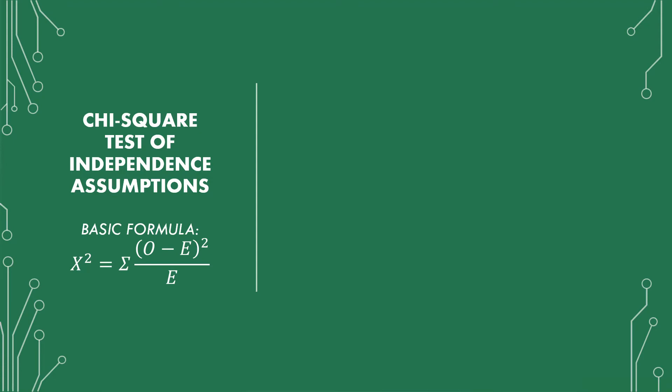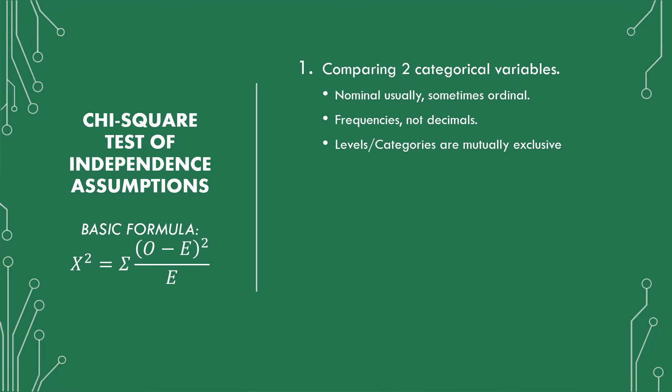In this video I'm going to go over the assumptions for the chi-square test of independence. The first assumption is knowing that you're comparing two categorical variables. You're not using any continuous variable — you're looking at things that have frequencies. They don't have decimals, they don't have fractions, they're whole numbers.